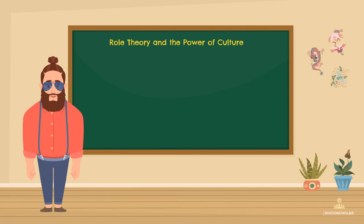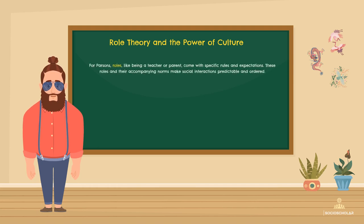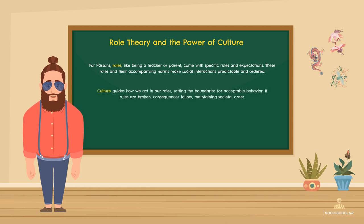In Parsons' theory, roles play a big part. A role is like a job or a part you play in society, such as a teacher or a parent, and with each role comes a set of rules or expectations. These roles make social life more predictable and ordered. For example, a teacher is expected to provide education, while parents are expected to care for their children. For Parsons, culture is important because it tells us how to act in our roles. It helps keep society working smoothly by setting out what is acceptable behavior for each role. If someone breaks these rules, there can be consequences, like people disapproving of their behavior or even formal punishment.